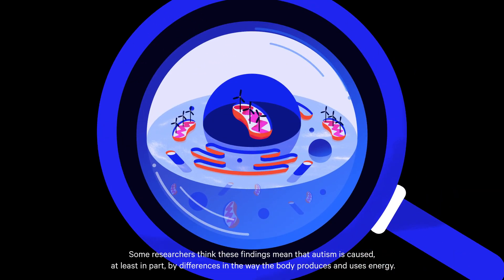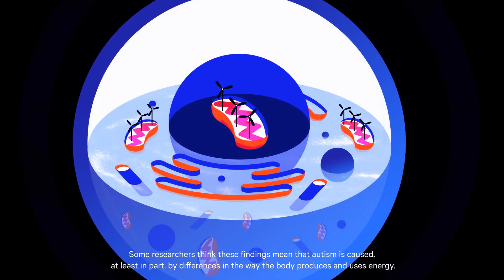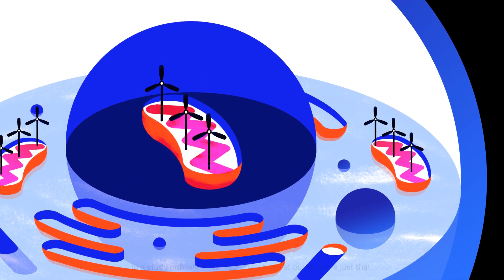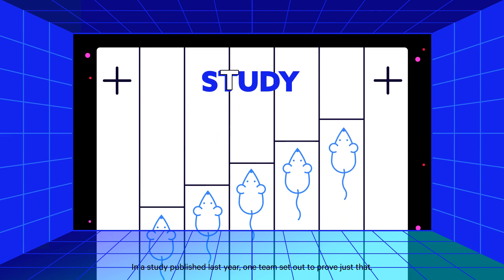Some researchers think these findings mean that autism is caused, at least in part, by differences in the way the body produces and uses energy. In a study published last year, one team set out to prove just that.